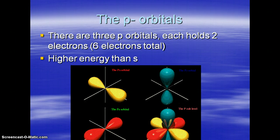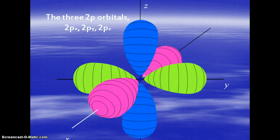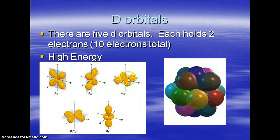The P orbital is a higher energy orbital than the S. The next energy level is the D orbital. There are five D orbitals, and each of those also holds two electrons. That's two times five — ten electrons total. This is an even higher energy than the P. The shapes get quite unusual, and when they are all put together you end up with a complex conglomeration.